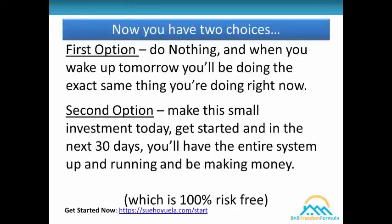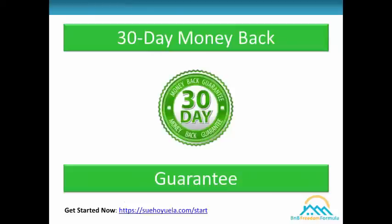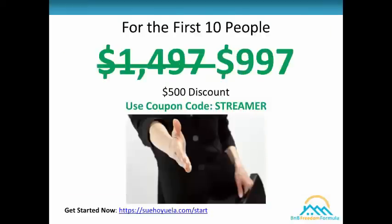You have two choices: do nothing and tomorrow you'll be doing the exact same thing you're doing right now, or make this small investment today and in the next 30 days you'll have the entire system up and running and be making money. This is 100% risk-free because the course comes with a 30-day money-back guarantee — just show me at least three property evaluations you've done for clients and if it still isn't working, request a full refund. And why the coupon code STREAMER? It's actually an acronym: Short-Term Rental Automation Master — what my students become after they master the systems in my course.